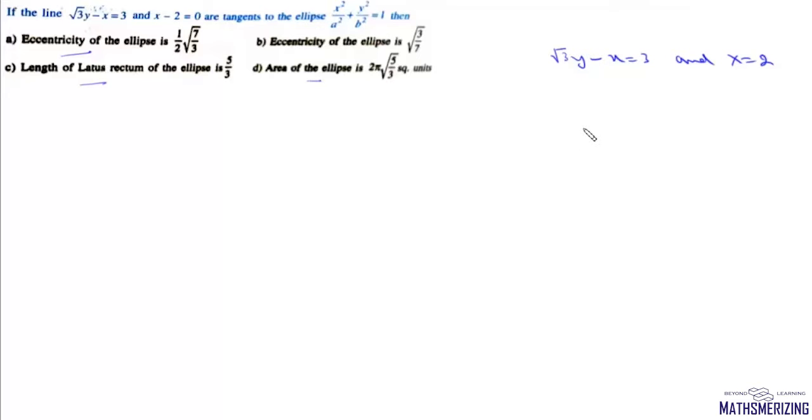We know that the line x = 2 can be tangent to this ellipse only when the value of a is 2. So that means this ellipse passes through (2, 0), so we can say that the value of a is simply 2.